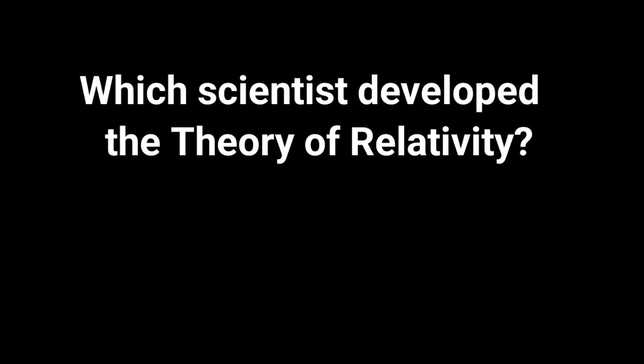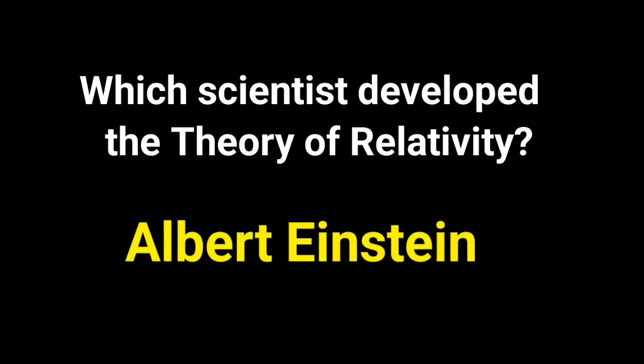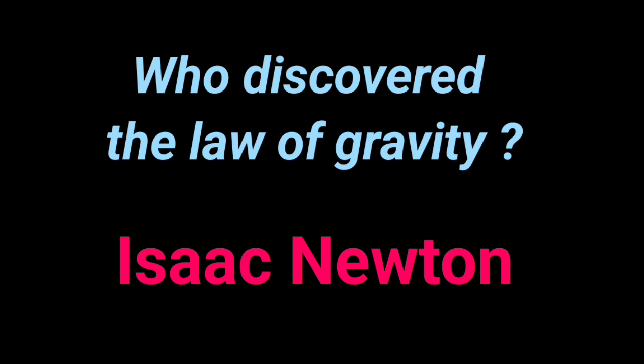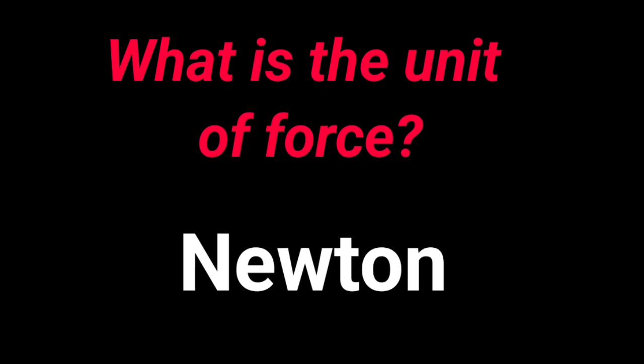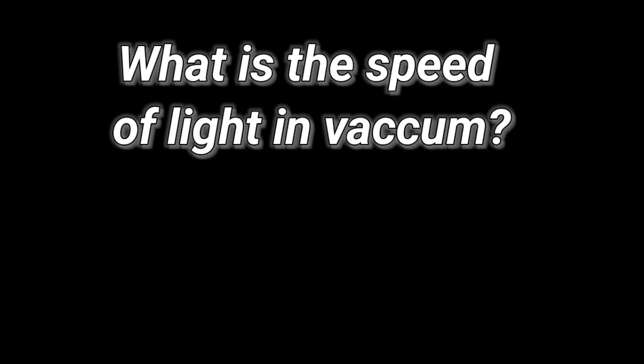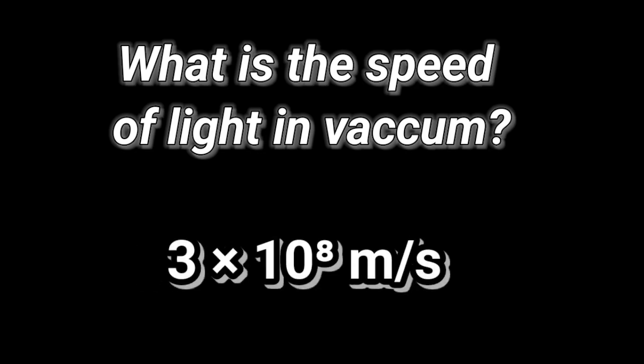Which scientist developed the theory of relativity? Albert Einstein. Who discovered the law of gravity? Isaac Newton. What is the unit of force? Newton. What is the speed of light in vacuum? 3 times 10 to the power 8 meters per second.